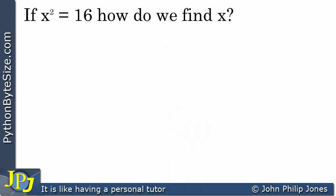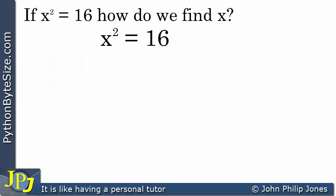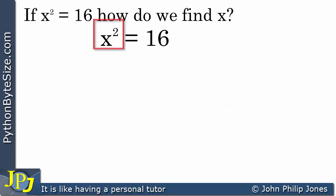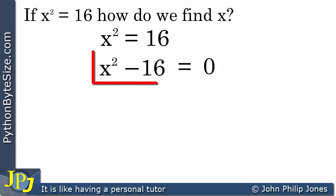Now changing tack slightly — if x squared is equal to 16, how do we find the value of x? What value of x, when squared, gives us 16? One approach is to rearrange so something equals 0. I can achieve that by taking 16 from both sides: x squared minus 16 equals 0. This gives us something I can use — and what I will do to this is factorize it.